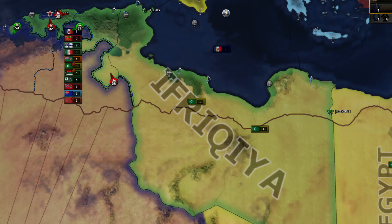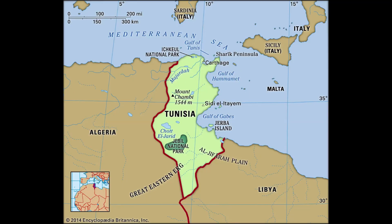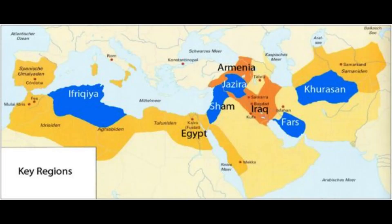Another theory suggests that the name Afrik is derived from the Berber term Ifrikia, or Ifrikian, which was the name given to a region in North Africa approximately corresponding to present-day Tunisia. Ifrikian was also the name of a dynasty that ruled this region in the 9th century.